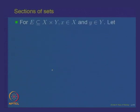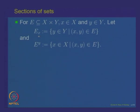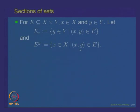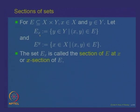For clarity, for any element E in X cross Y, x in X, and y in Y: the section E_x (E lower x) is defined as all points y in Y such that (x, y) belongs to E. Similarly, E^y (E superscript y) is defined as all points x in X such that (x, y) belongs to E. E_x is called the x-section of E at point x and is a subset of Y; E^y is called the y-section of E at point y and is a subset of X.